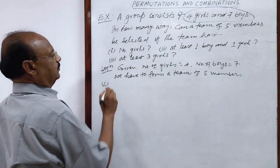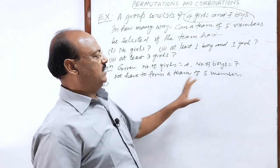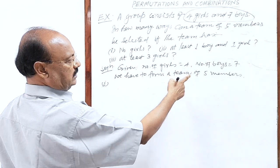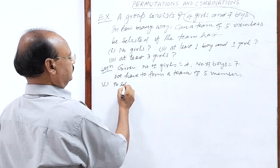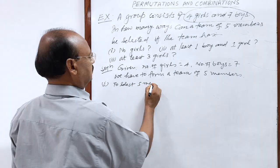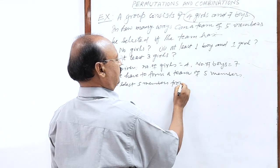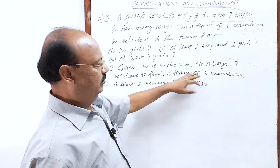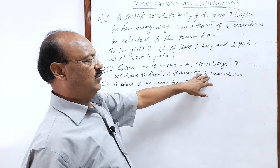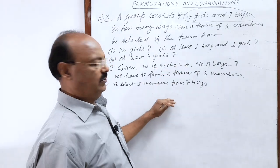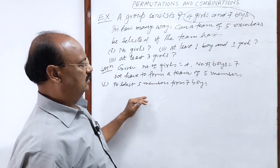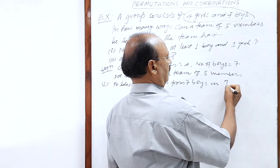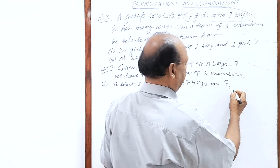Let us see the first part of this question: no girls. No girls means we have to select all five members from boys. To select five members from seven boys, because there is no girl. In how many ways can we do it? Total number of boys is seven, and we have to select five. So, seven C five.